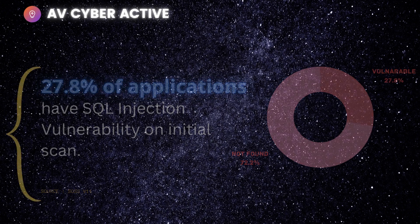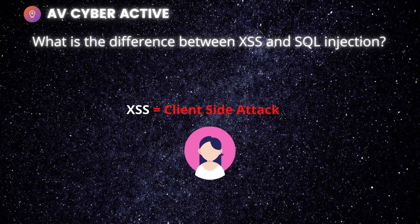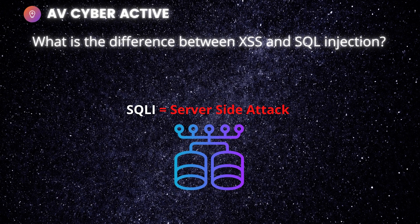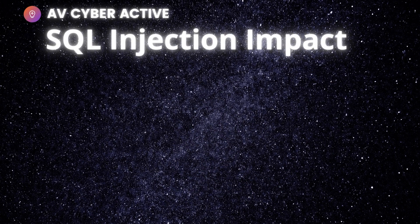Before moving ahead, I'd like to explain the difference between XSS and SQL injection. I've made a separate video about XSS — I'll link it in the cards. The basic difference: XSS, or cross-site scripting, is a client-side vulnerability that targets the application user, whereas SQL injection is a server-side vulnerability attack that targets the application's back-end database.